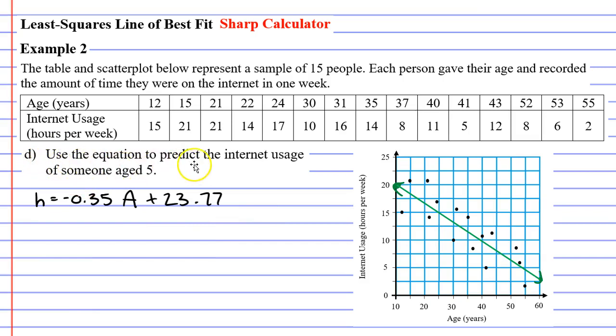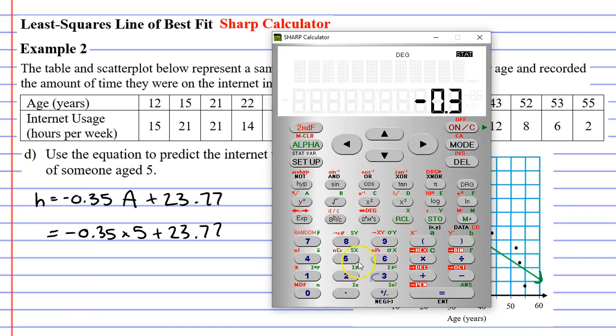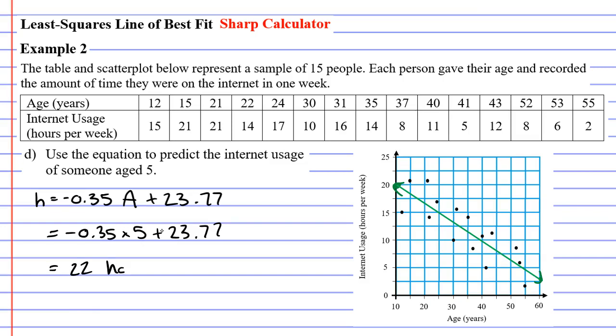We'll now move on to question D. Question D says, use the equation to predict the internet usage of someone aged 5. Our scatter plot only goes to 10 years old, so we're actually going beyond the 10 out here somewhere. You can see it's probably going to be something slightly above 20 hours of usage. So we'll just substitute that in, so that means our A, our age, becomes 5, and the rest of the numbers stay the same. We're just going to type this into our calculator. So negative 0.35 times 5 plus 23.77 equals, and we get around 22 hours of internet usage. I want to point out that this is actually an example of extrapolation, because when we look at our line of best fit, it only goes between 10 and 60. We're actually going beyond that. We're having to extend the line to find the hours of internet usage for a 5-year-old.